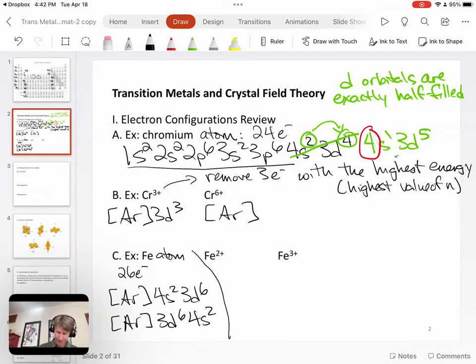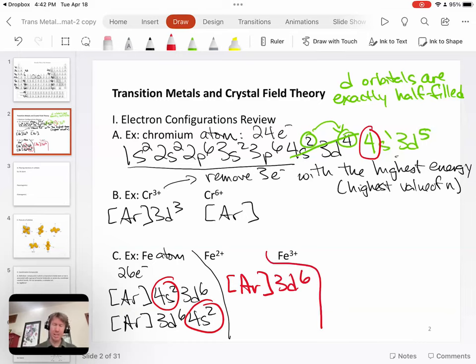Now let's draw a line there. We'll do our Fe2+. Fe2+ means take two electrons away. When we take two electrons away, we are going to take the N equals 4 electrons first since they have the highest value of N, N equals 4. So that means for Fe2+ we are going to have argon 3D6. And then for Fe3+ we are going to take one more electron away, and we are going to have argon 3D5.